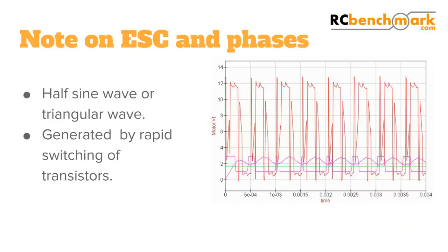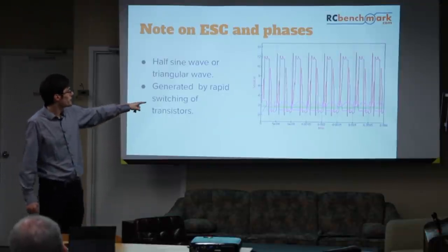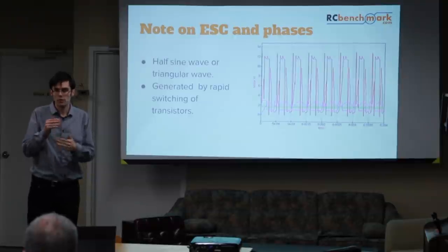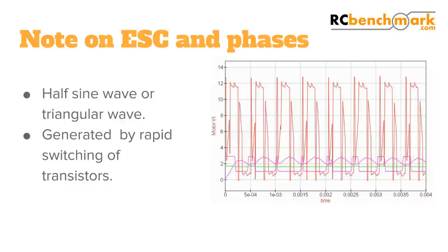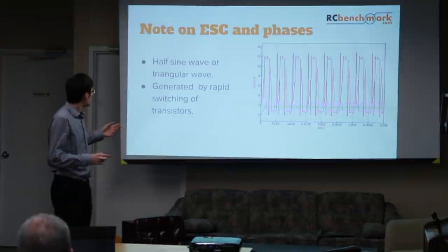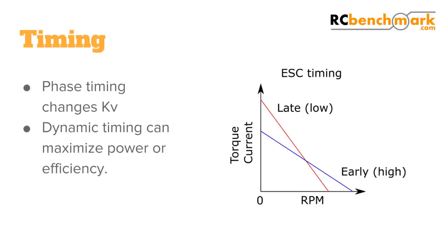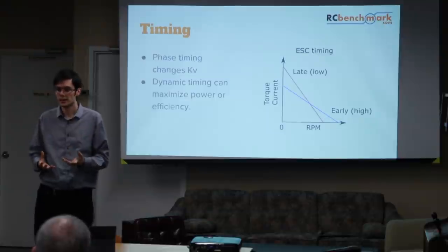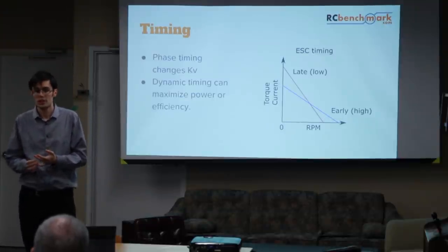I won't talk too much about ESCs, but they do have an impact. What we captured on the oscilloscope shows the ESC output looks very different when loaded versus unloaded. Essentially, ESCs are just transistors switching very, very quickly — the switching time is around 0.004 seconds — generating something like a half-sine wave or triangular wave. One important ESC option is timing, which people who are racing play with a lot.